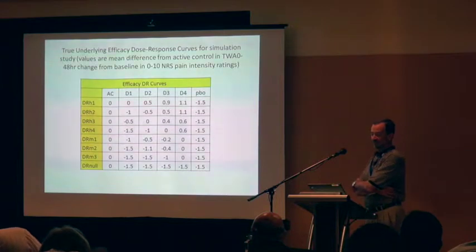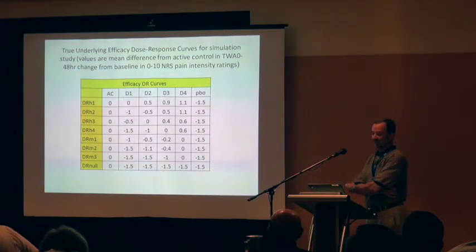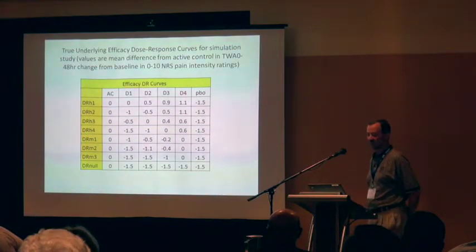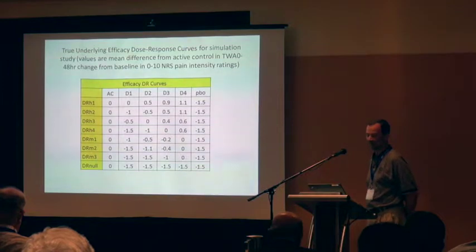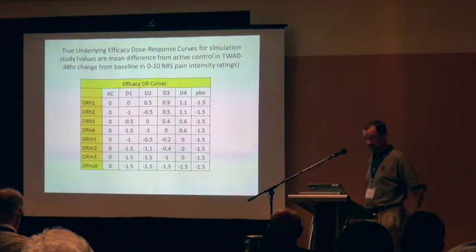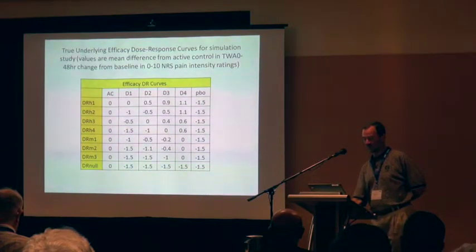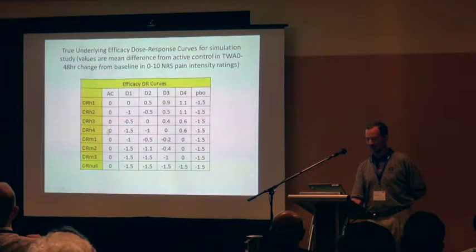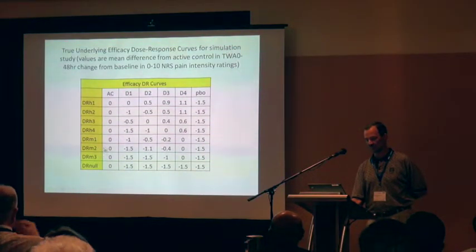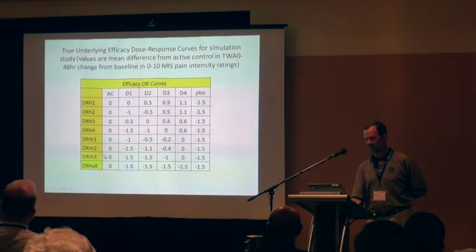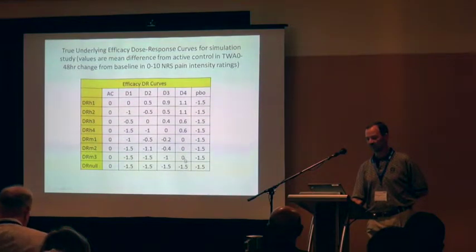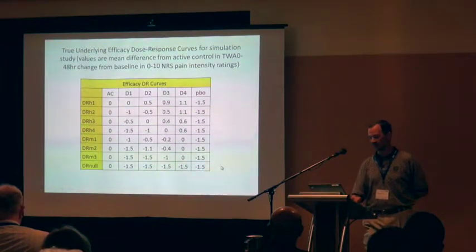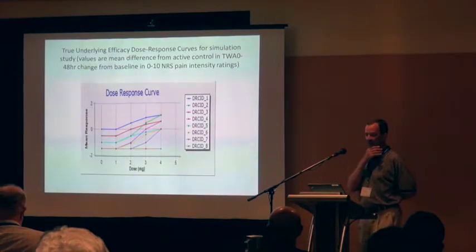The efficacy dose-response curves considered included four doses of drug, the active control, and placebo. We compared to the active control, arbitrarily giving it a value of zero, and had a series of three high dose-response scenarios where the drug was better than the active control. We also had three medium dose-response scenarios where at the high dose there was similarity to the active control, and then the null case where the drug was not effective at all.